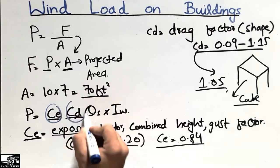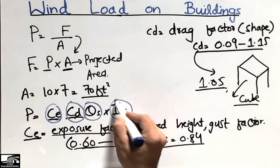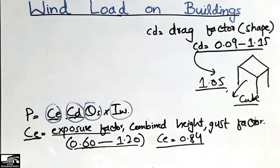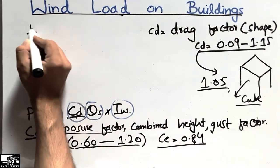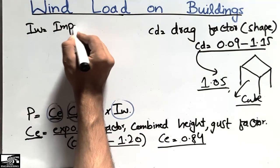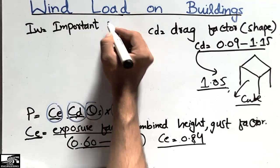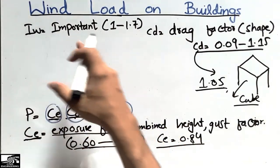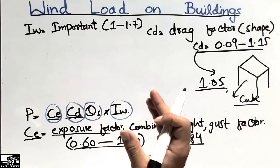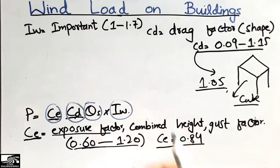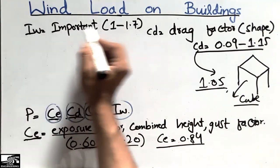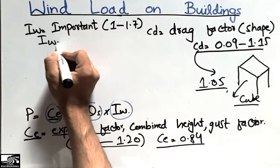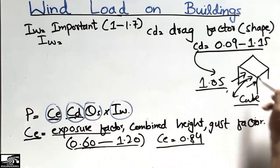Now I will explain the IW and QS factors. The IW is the importance factor — it indicates how important your structure is. It ranges from 1 to 1.7 or maybe 2. For example, if your structure contains hazardous materials or heavy machinery, you take a higher importance factor. For a residential building, the importance factor is 1, which we will use in our case.